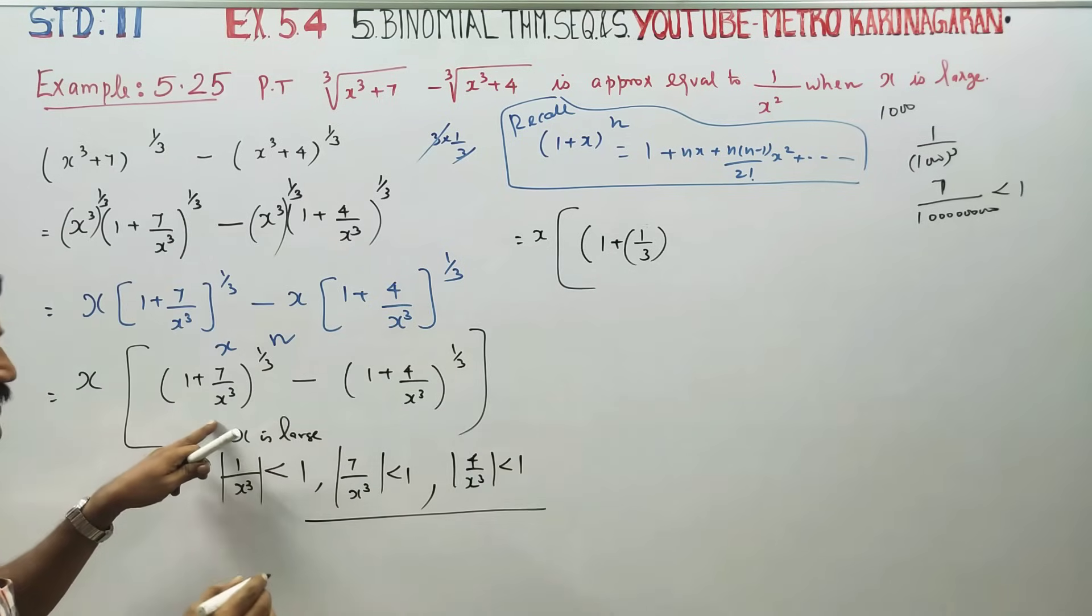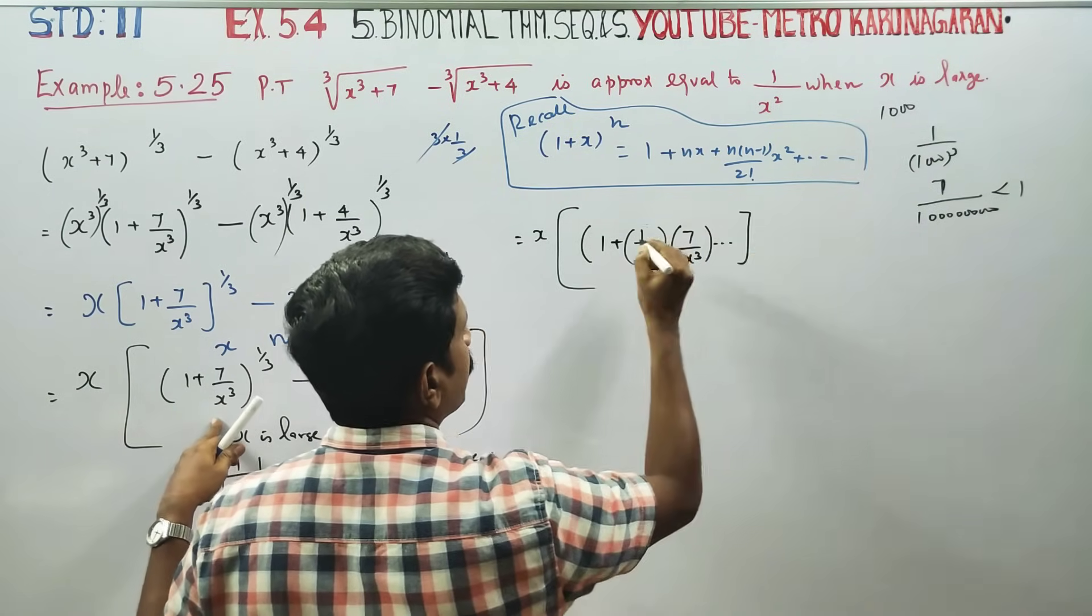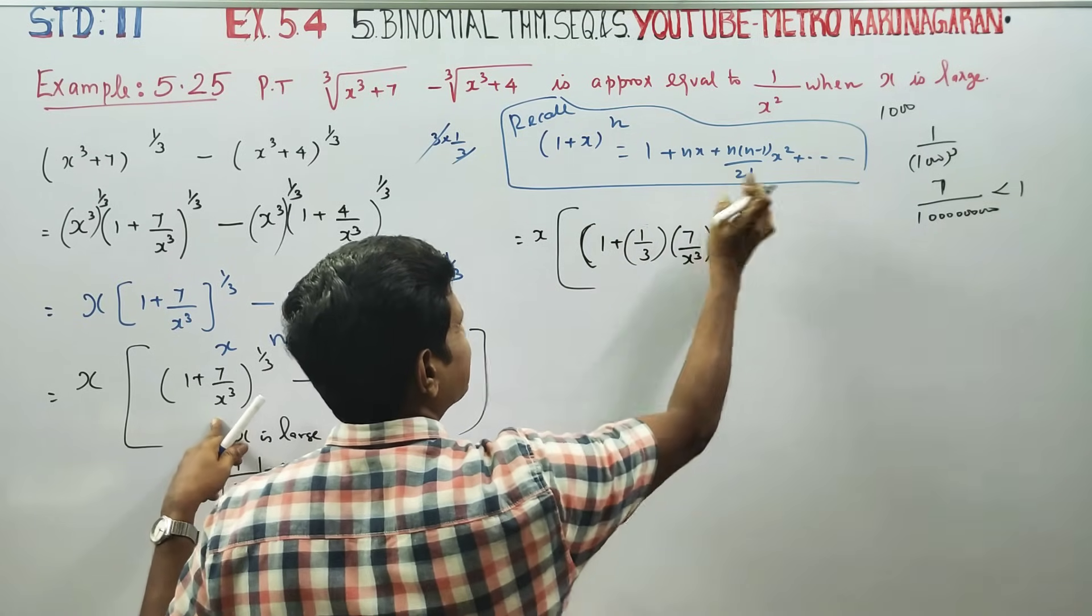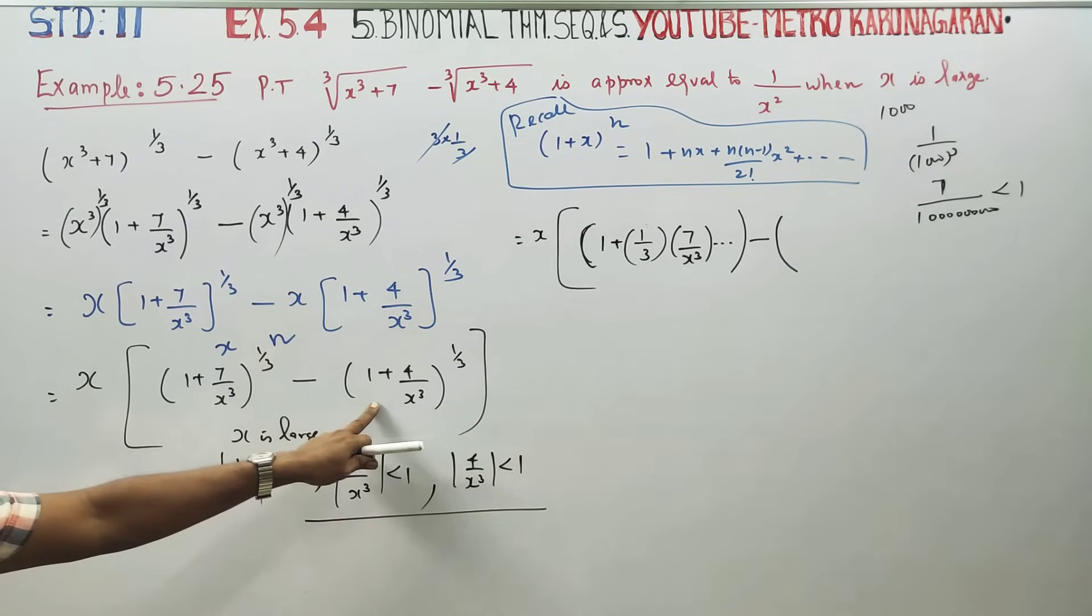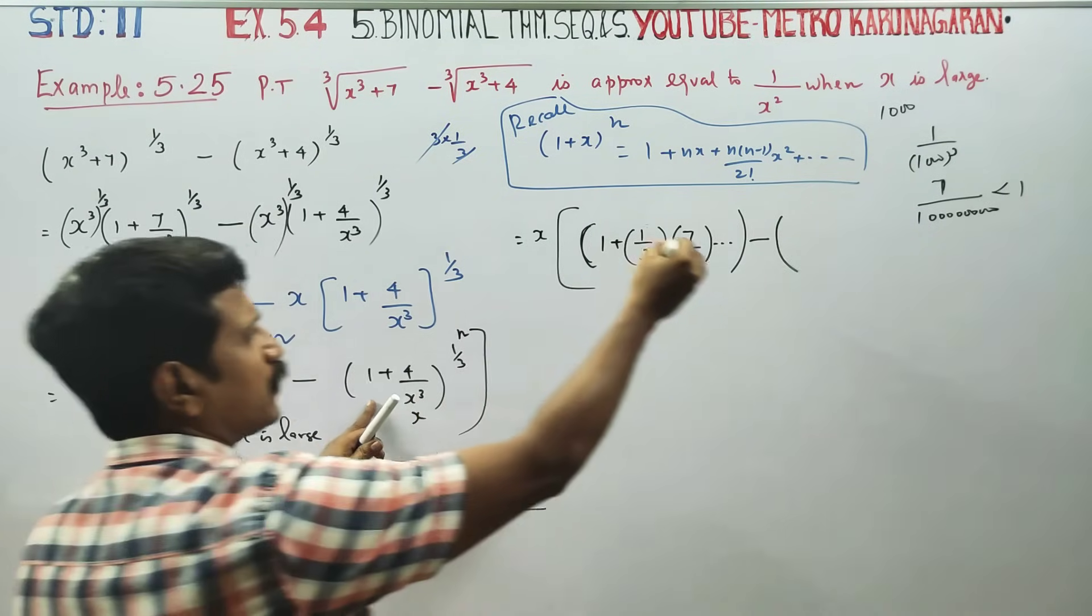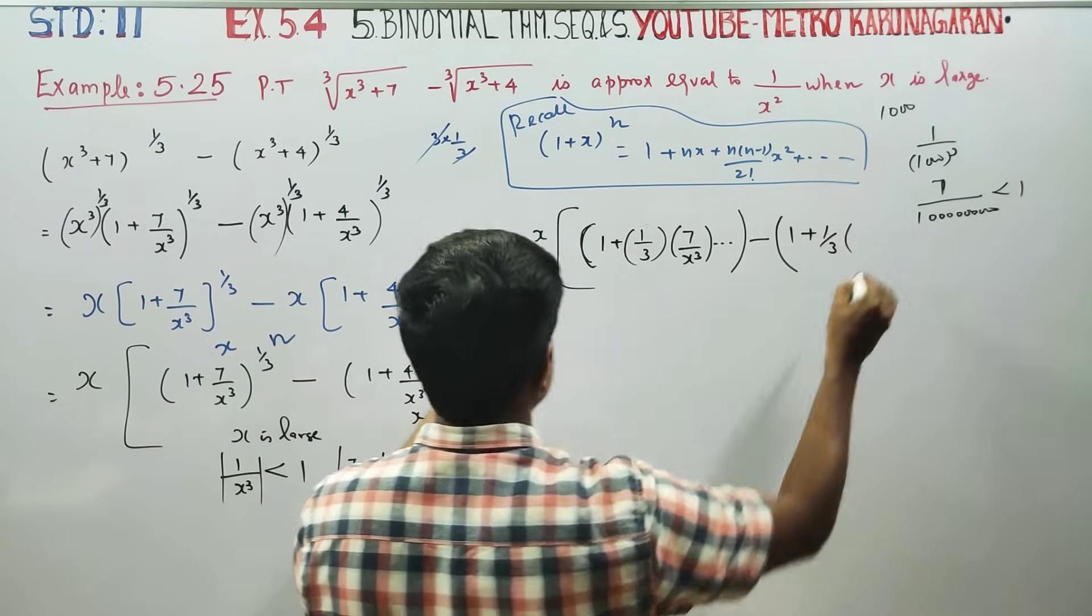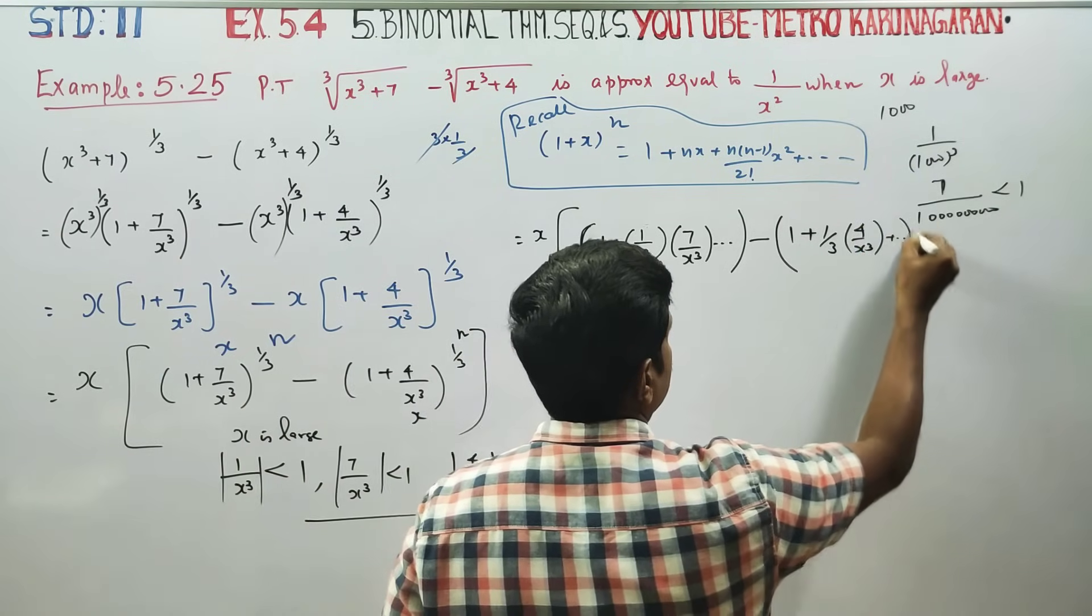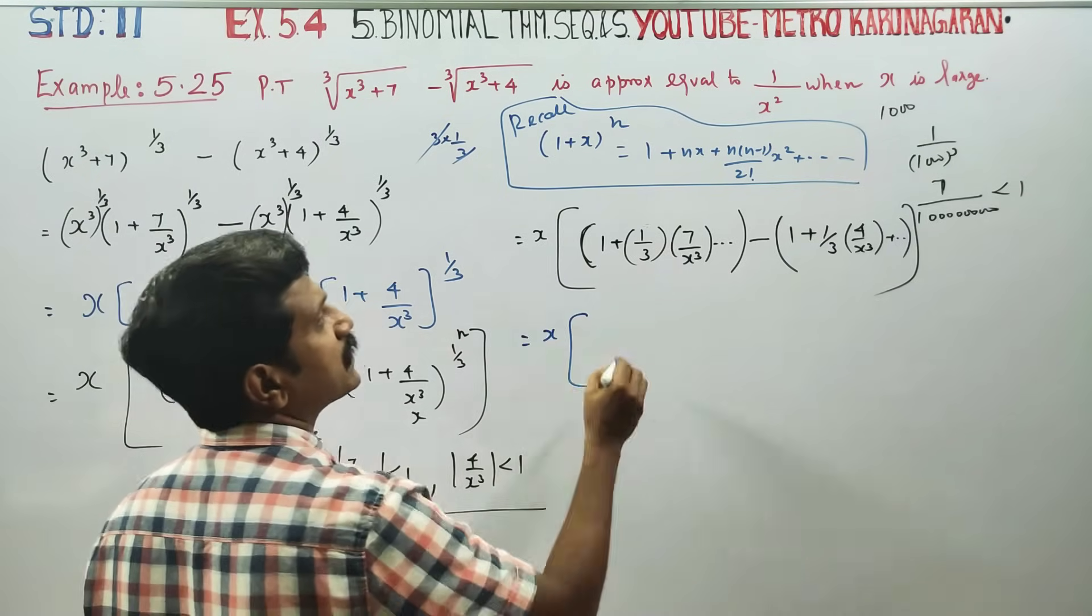For the first bracket: 1 + (1/3)(7/x³) + ... Minus the second bracket: 1 + (1/3)(4/x³) + ...